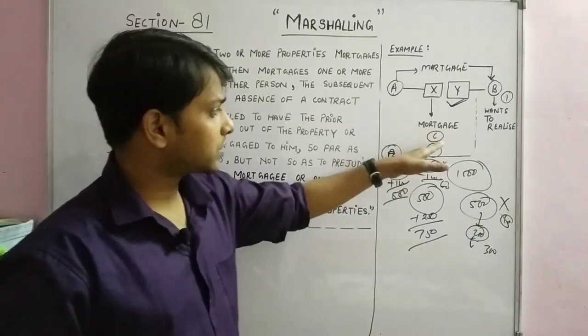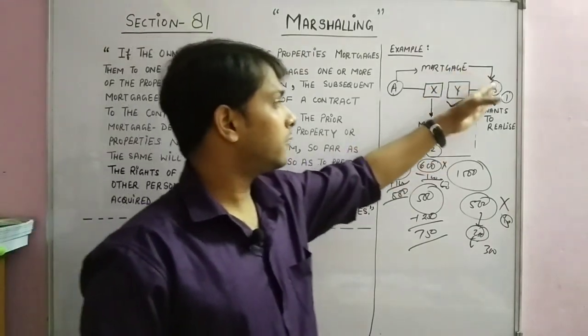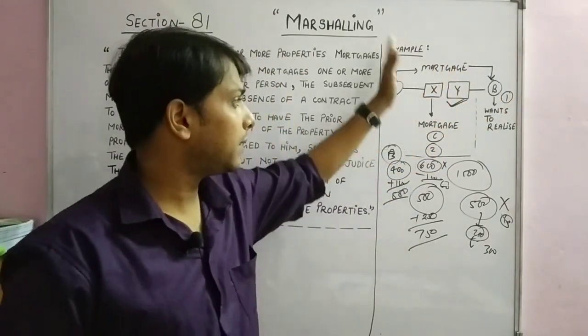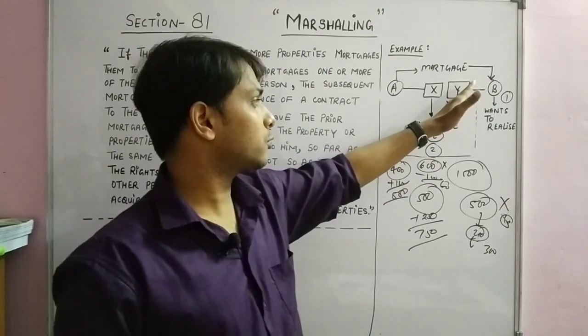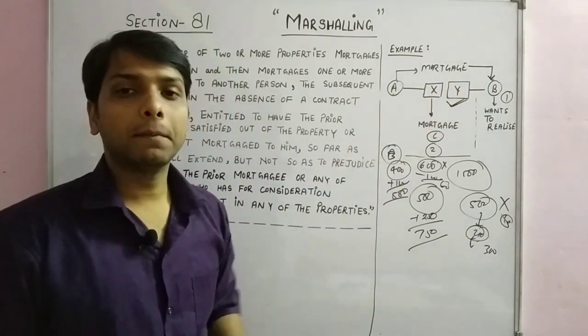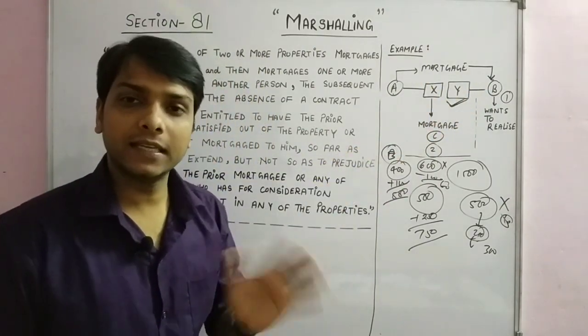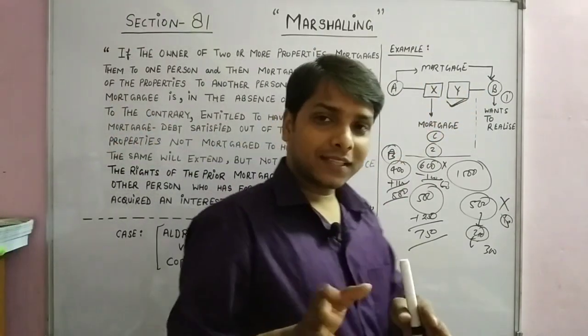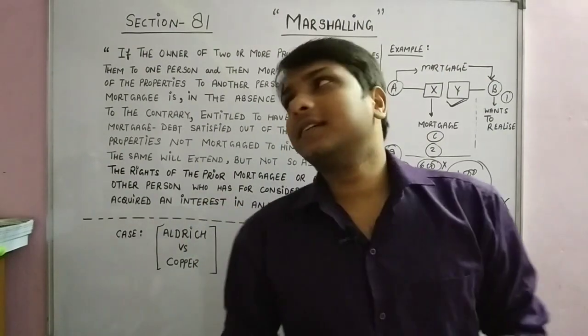So the meaning of Marshalling is this: C can compel B to first satisfy himself from the property that was not mortgaged to C. Now let's see what the bare act says.